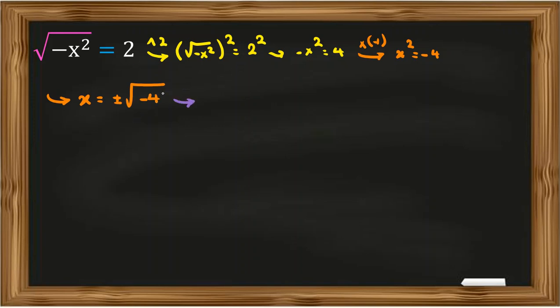We can conclude that x equals plus or minus 2 root negative 1. In complex numbers, we know i equals root negative 1, so it will be plus or minus 2i.